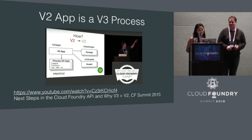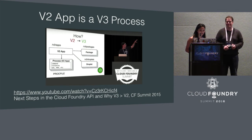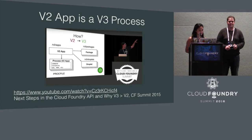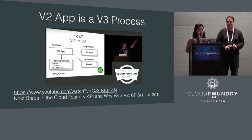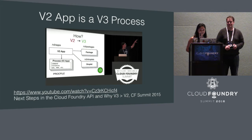Our solution was to extract things like the droplet and package from a V2 app into top-level domain objects that have their own API endpoints, all living under an umbrella V3 app. By splitting the app monolith into more manageable and independent concepts, we're able to provide an API that supports more flexible and nuanced management of your Cloud Foundry apps. For the technical details, we encourage you to check out Jim Myers, Ilan Santos, and Zach Robbins' talk from last year's summit.